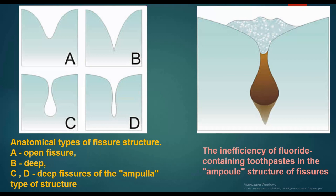In the picture we see anatomical types of fissure structure: picture A shows open fissures, picture B shows deep fissures, and pictures C and D show deep fissures of the ampulla type of structure. The second picture shows the infiltration of fluoride into the ampulla structure of fissures.